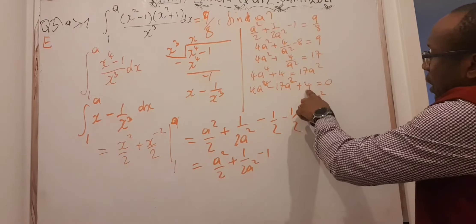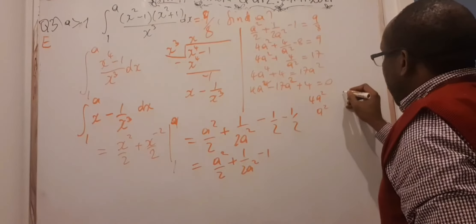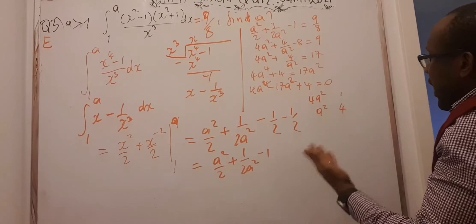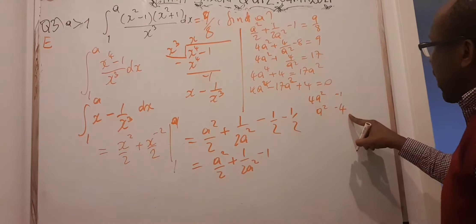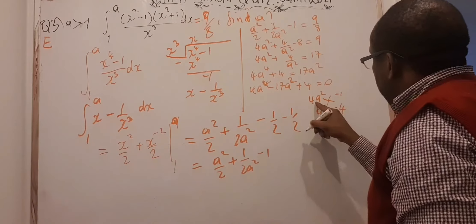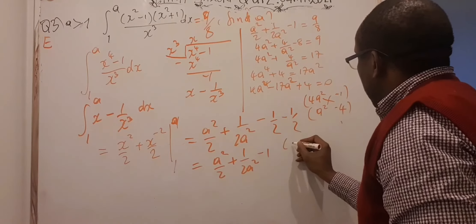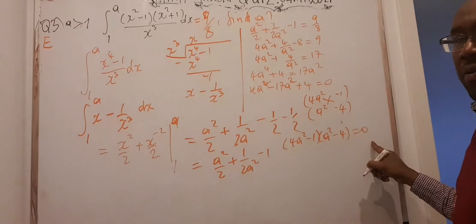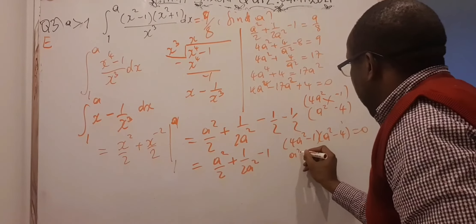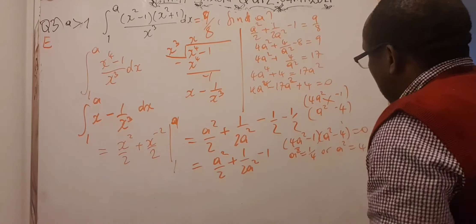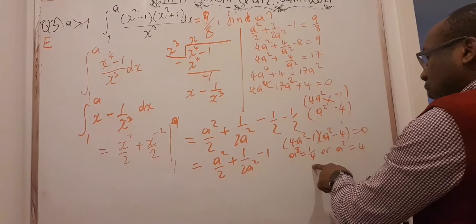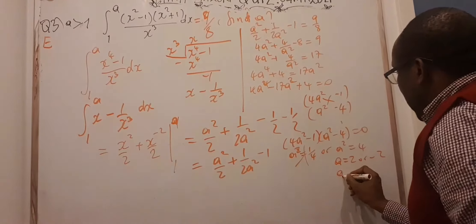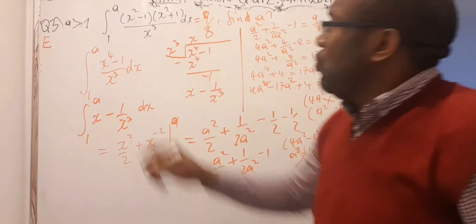Factorizing 4A⁴ − 17A² + 4 = 0 gives (4A² − 1)(A² − 4) = 0. So either A² = 1/4 or A² = 4. Since A is greater than 1, A² = 1/4 is not possible. From A² = 4, we get A = 2 or A = −2. Since A is greater than 1, A must equal 2. So A was 2, and if you checked among the answers, E was the correct one.